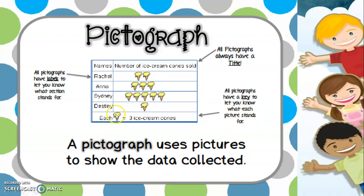For example, in the key, each ice cream cone is equal to three counts. If we ask how many ice cream cones did Rachel sell, we see only two cones. But according to the key, each cone counts as three, so Rachel sold six ice cream cones.